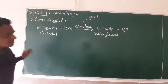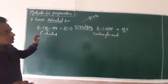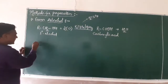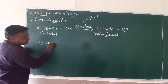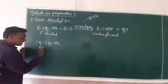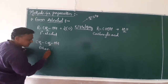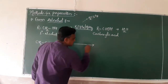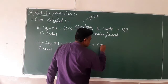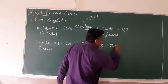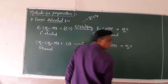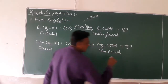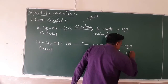We have seen this type of reaction in the alcohol chapter. Primary alcohol undergoes oxidation in the presence of acidified potassium dichromate to form carboxylic acid. For example, CH3CH2OH — ethyl alcohol or ethanol — when it undergoes oxidation with the same oxidizing agent, it converts into CH3COOH. This 2-carbon compound is ethanoic acid, commonly known as acetic acid.